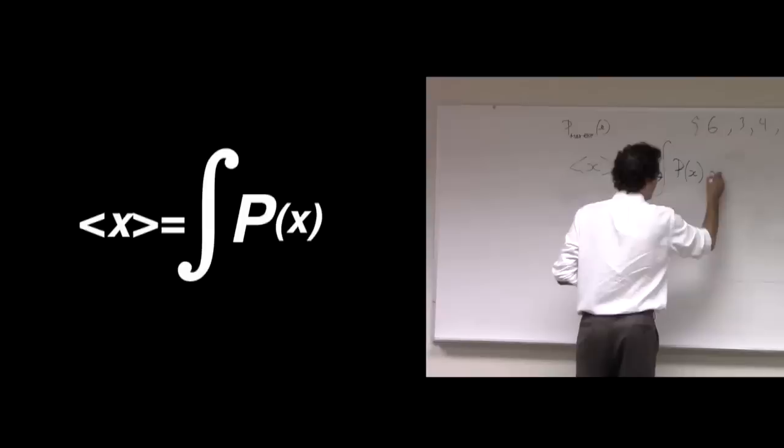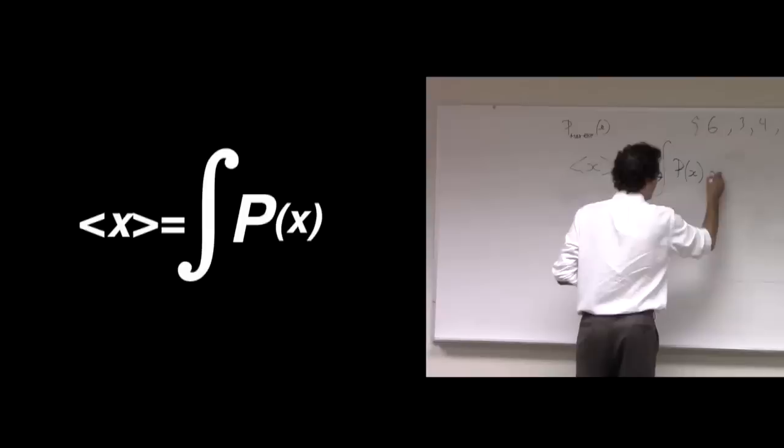And so the way we do that is we integrate the probability of waiting X time times X dx, integrate from 0 to infinity.